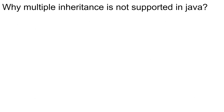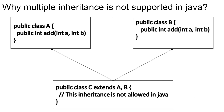Why is multiple inheritance not supported in Java? Consider class A with an add method that accepts integers a and b, and class B which also has the same add method. If class C tries to extend both A and B, the compiler gets confused about which add method to give to class C. This adds complexity to the code, and since Java is known to be a simple language, multiple inheritance is not supported in Java.